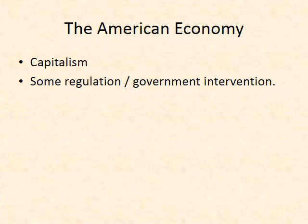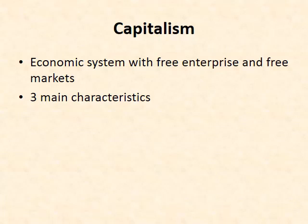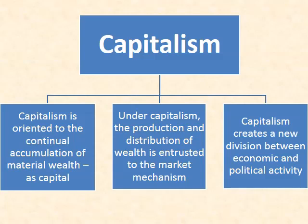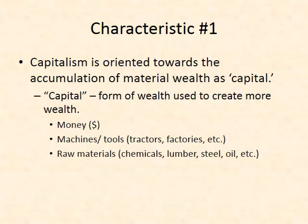The American economy is a capitalist economy, but it's not completely free markets or free enterprise — there is some regulation and government intervention. Restaurants, for example, have to be inspected by a health inspector to make sure nobody gets sick. We're going to talk about how that has played out throughout U.S. history. Capitalism has three main characteristics: first, capitalism is oriented to the continual accumulation of material wealth as capital; second, the production and distribution of wealth is entrusted to the market mechanism; and third, capitalism creates a new division between economic and political activity.